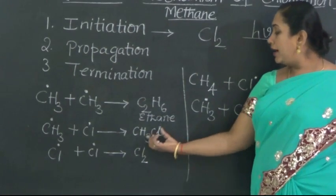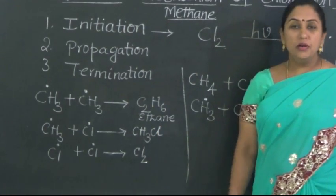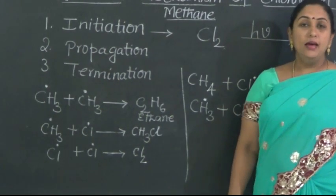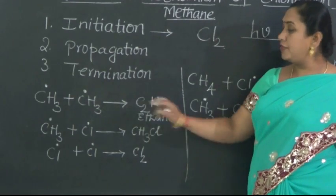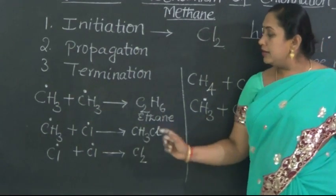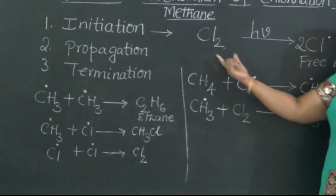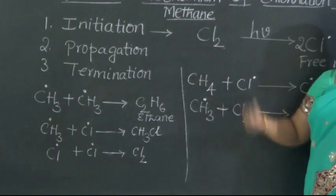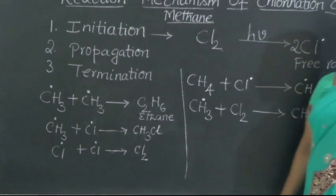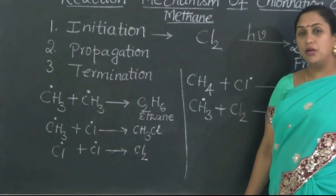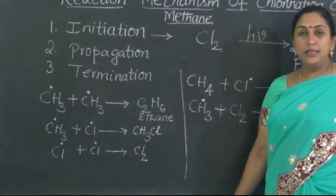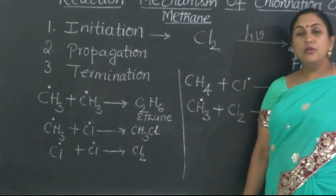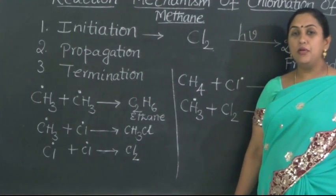As we can see, we had only the formation of chloromethane. If we require further higher substituted products of methane, we should take a large excess quantity of chlorine. Only then will it yield the subsequent substituted products: dichloromethane, trichloromethane (chloroform), and tetrachloromethane (carbon tetrachloride).